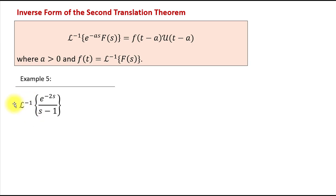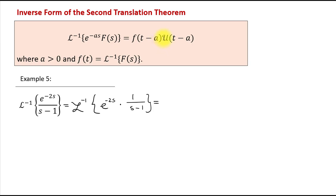Let's try an example of the inverse form. We need to find the inverse Laplace transform of e^(−2s) / (s−1). To use the inverse form, we need a product of e^(−as) and some F(s), so we separate: e^(−2s) times 1/(s−1). The answer will be the product of the translated function f(t−a) and the unit step function at a. The value a = 2 comes from the power of e, so the unit step function is at 2.